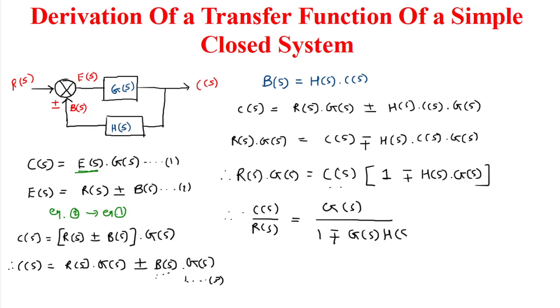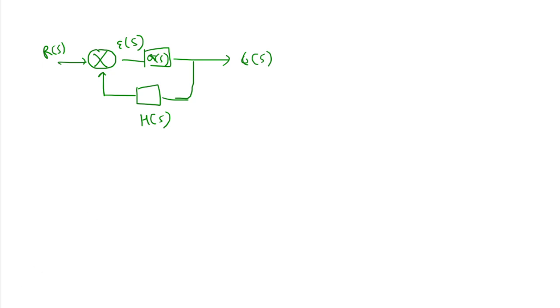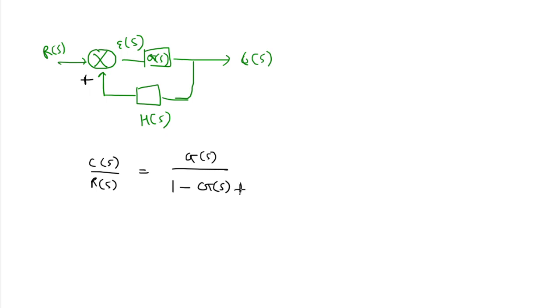That is the transfer function for this simple closed loop system. Here you can see the block diagram with input R(s), output C(s), forward path G(s), and feedback path H(s). If there is positive feedback, the transfer function C(s)/R(s) is given by G(s) / (1 − G(s)·H(s)).